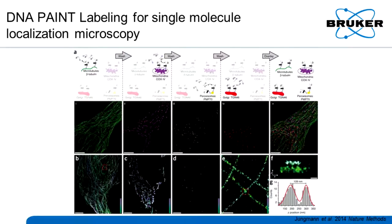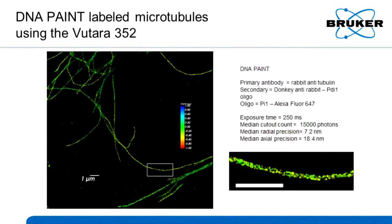In Jung Whan's experiment from the Nature Methods paper, he barcoded four different antibodies with different oligos and performed DNA Paint imaging. He was able to image microtubules, mitochondria, peroxisomes, and the Golgi, building a four-color image. We can do this on the VUTARA too as a proof of principle — labeling microtubules and getting very high photon counts of 15,000 photons per localization, giving very high radial and axial localization precision. Even on a water immersion objective at relatively low magnification, we can see the lumen of the mitochondria and the microtubule label.